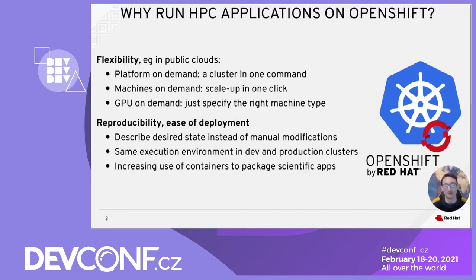Kubernetes also facilitates the deployment of payloads and their reproducibility. In Kubernetes, you don't deploy your modifications manually. Instead, you describe the resources you want to have in the cluster, and Kubernetes operators take care to prepare them. This guarantees that you have the same execution environment on your development workstation and in the production clusters. The usage of containers also improves reproducibility, and containers are used more and more often to package and distribute scientific applications.